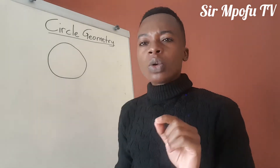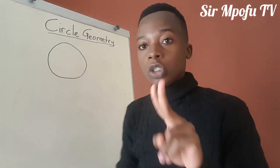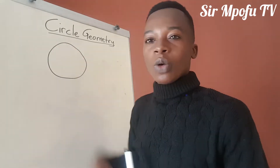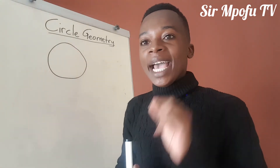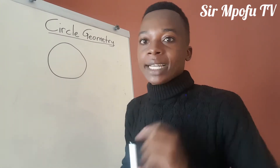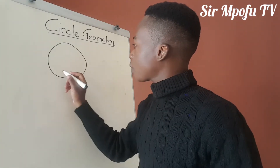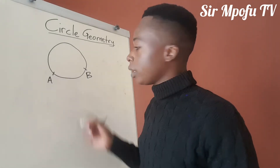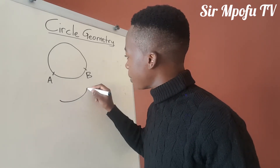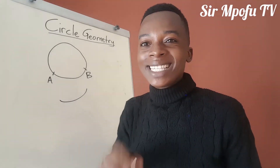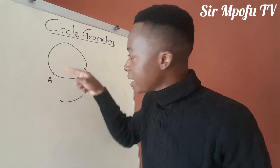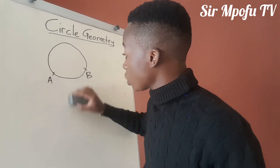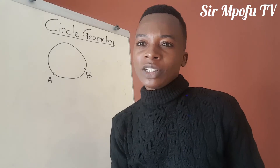There are two parts of a circle I want you to know and understand. The perimeter of the circle — the outer part, or the boundary of the circle — is known as the circumference. A part of the circumference is called an arc. If I remove a certain part of the circumference and label it A and B, that segment AB is known as an arc. We have the major arc and the minor arc.